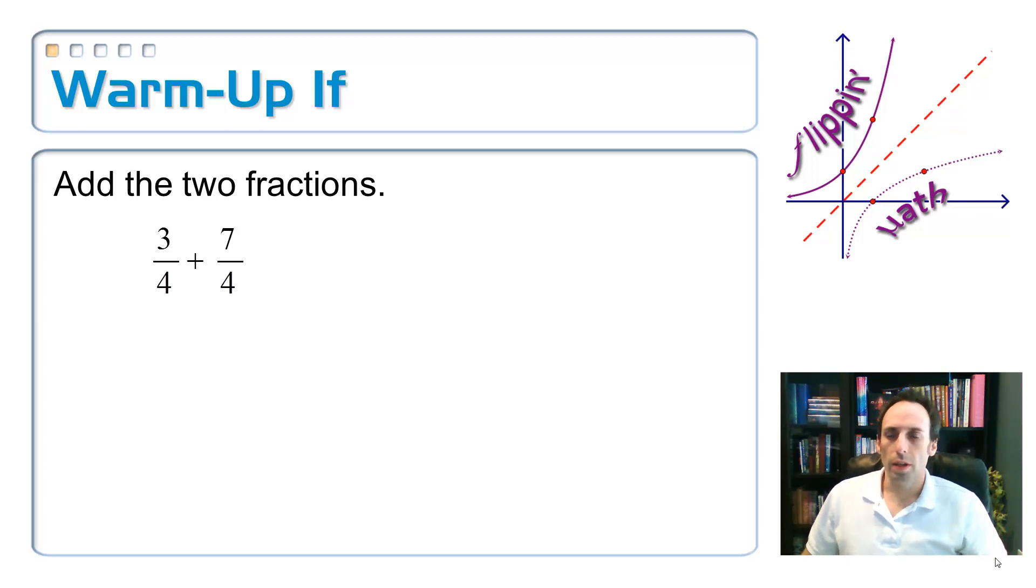Let's start off here by warm up one F, one fraction. Just simply add these two fractions. How do you add two fractions? Well, if they have the same denominator, you keep it the same and you just add up the tops of those.